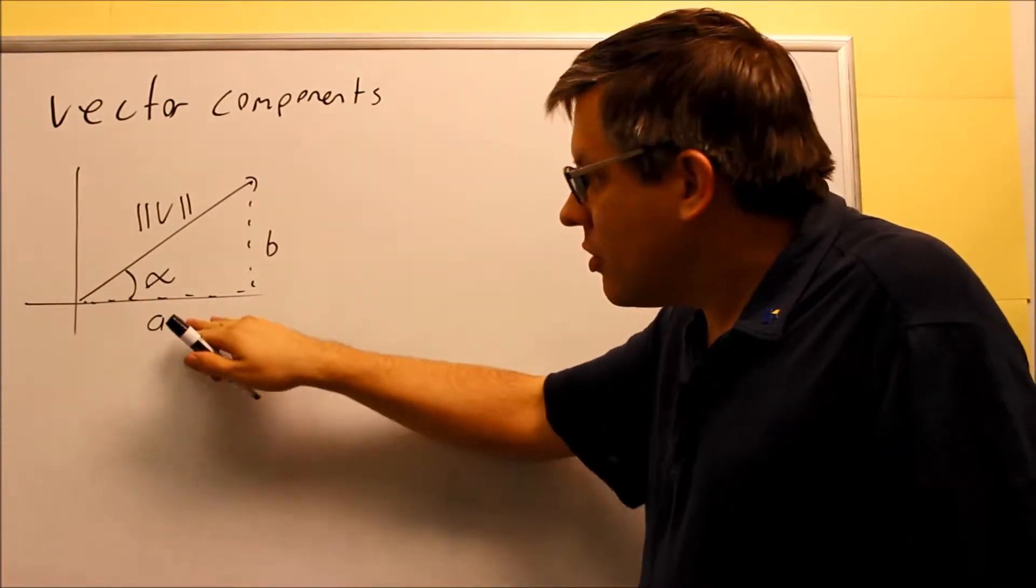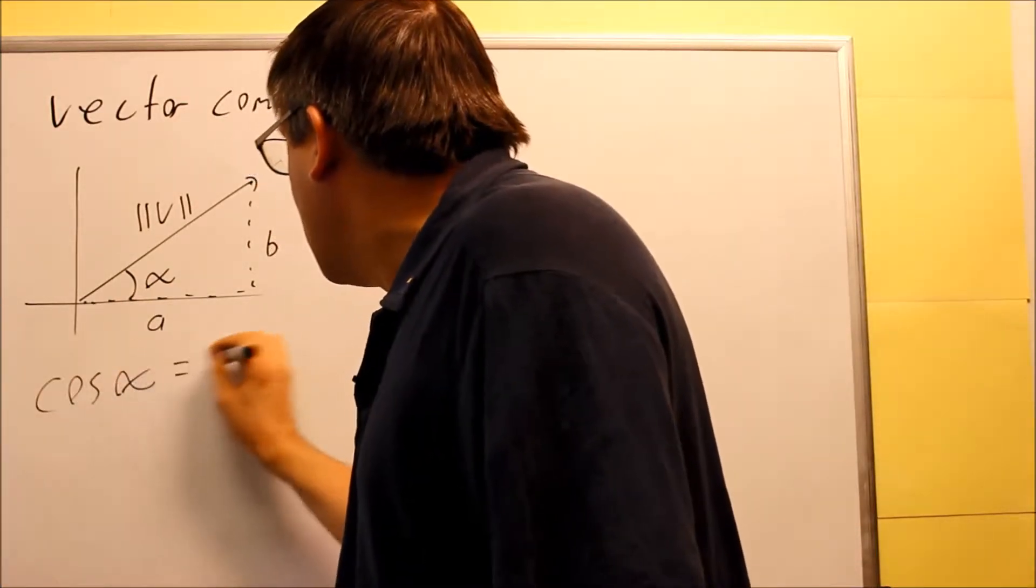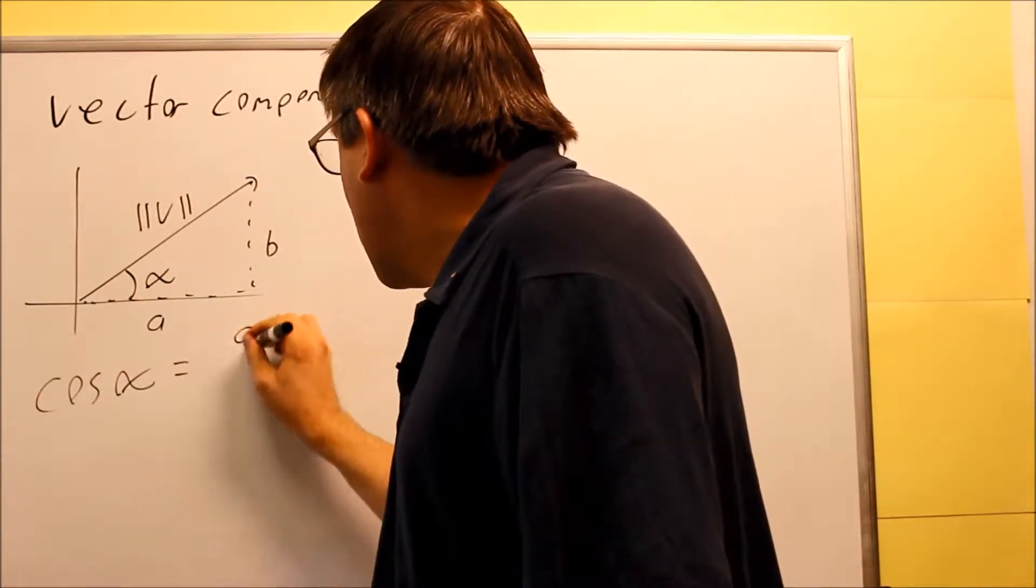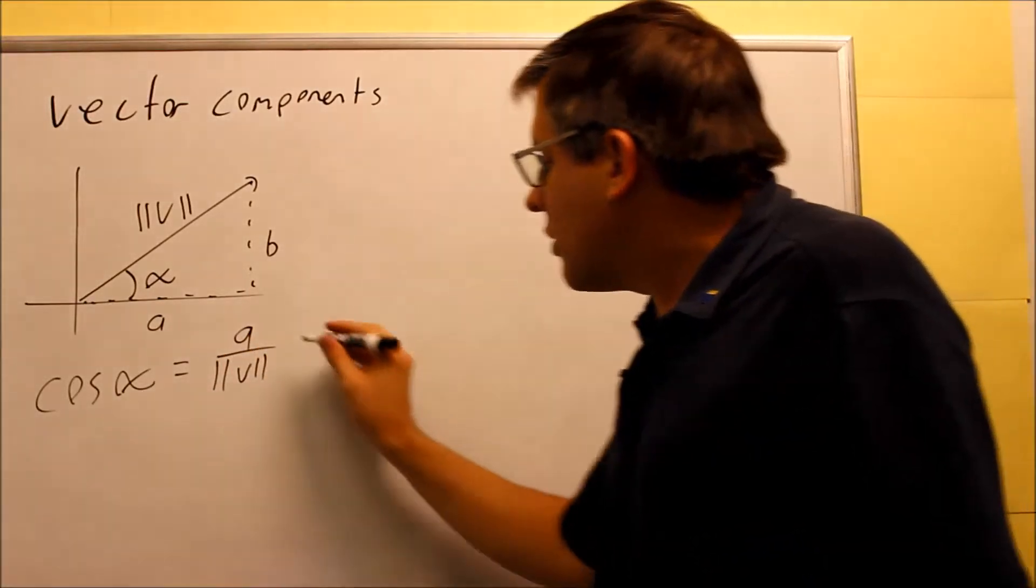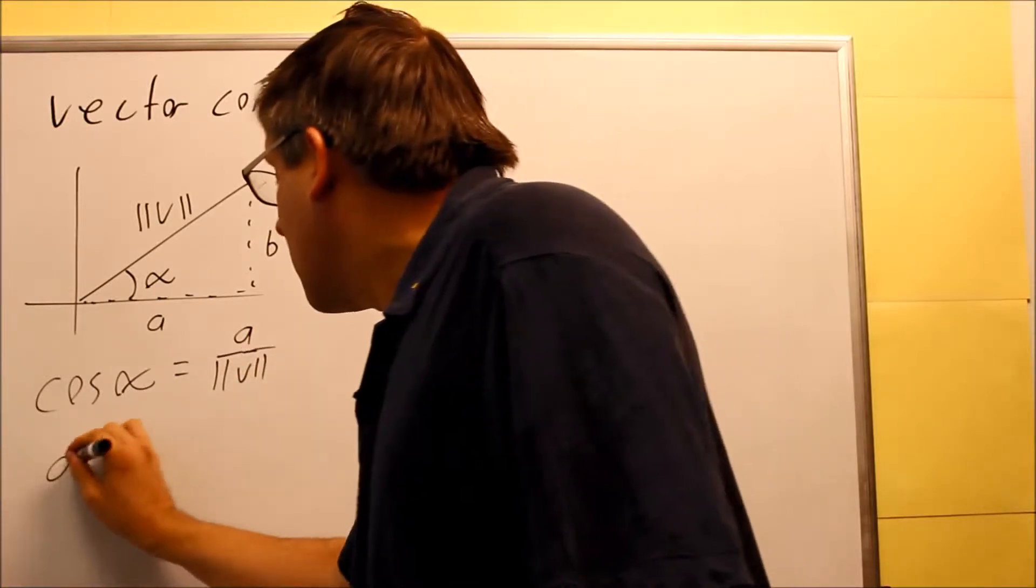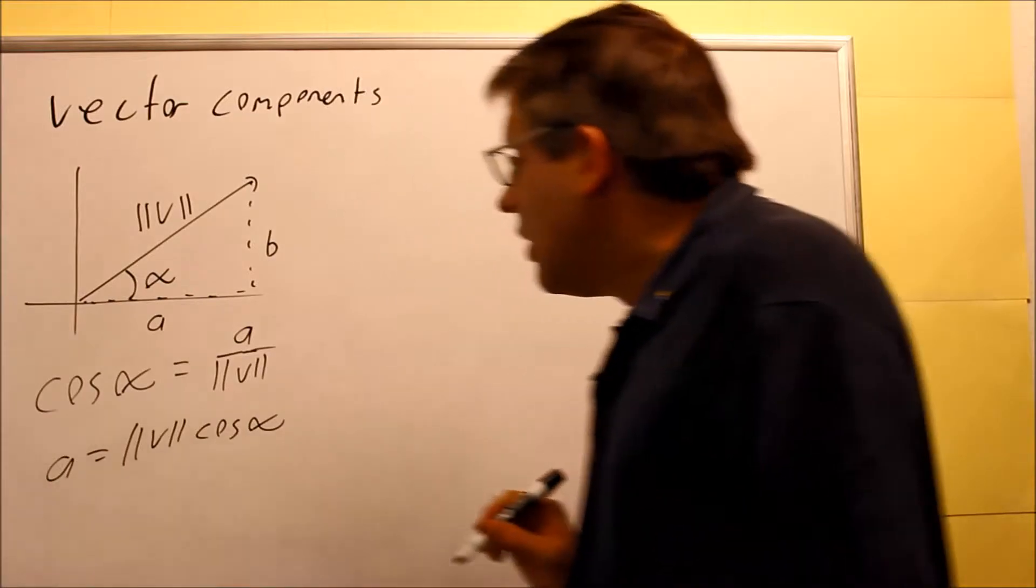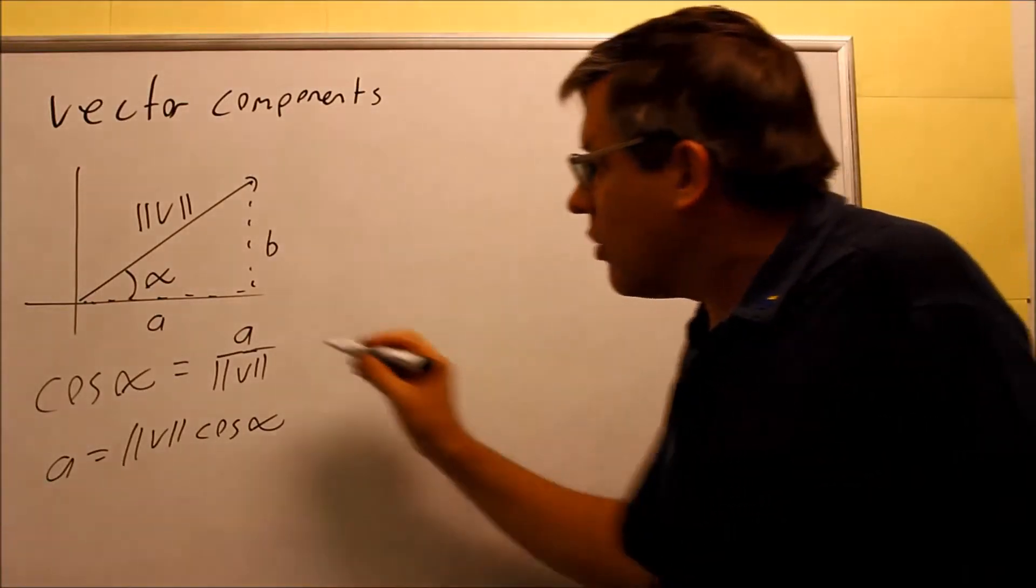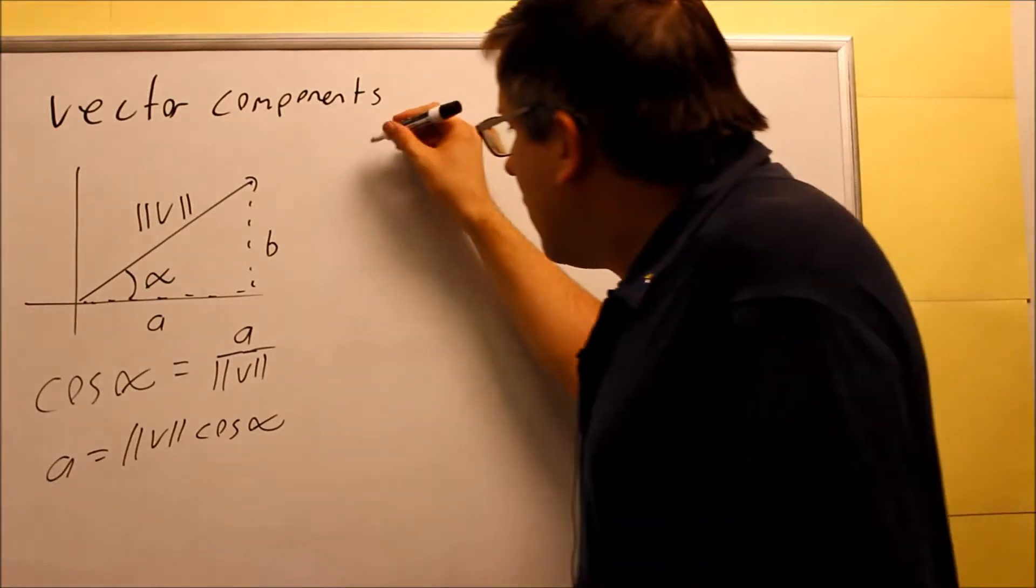That's going to be your cosine. That's your adjacent over hypotenuse. So we can write this as cosine alpha equals adjacent A over hypotenuse, which is magnitude of V. And if I take this and solve that for A, I get magnitude of V times cosine alpha. That's a way that I can represent the horizontal part based off of the magnitude and the alpha there.